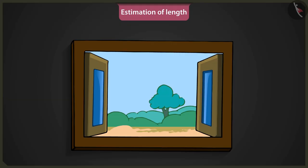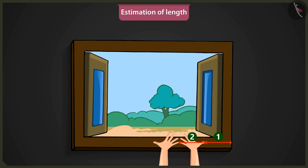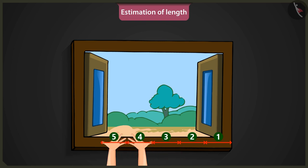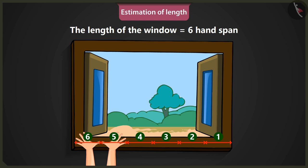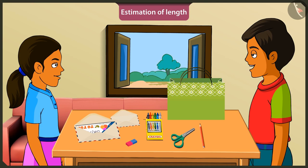Do you want to try it? This is one hand span long. Now I will place the left hand touching the right hand — that makes two hand spans. I lift the right hand and place it forward touching the left hand — this is three spans long. I will repeat the process till I reach the end of the window. The length of the window is six spans of my palm.